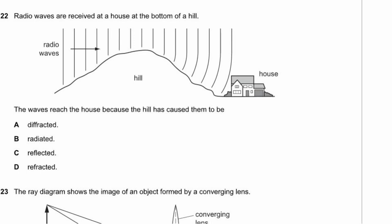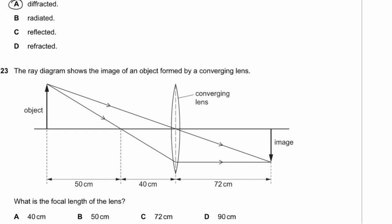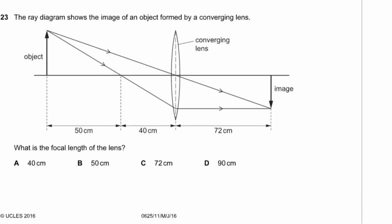Question 22. Radio waves reach a house at the bottom of a hill because the hill has caused them to be diffracted — bending round the hill due to their wavelength. Diffraction is different from refraction; a helpful memory aid is diffraction gratings, where light is spread out.